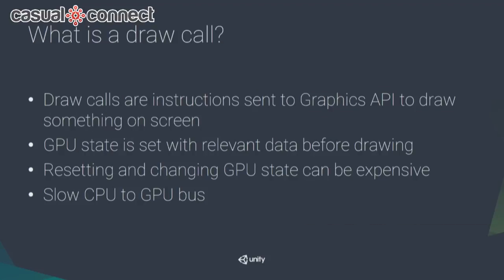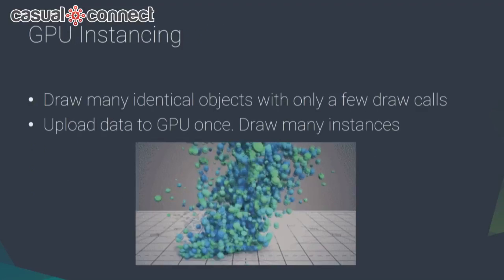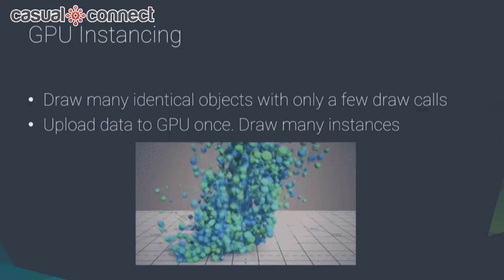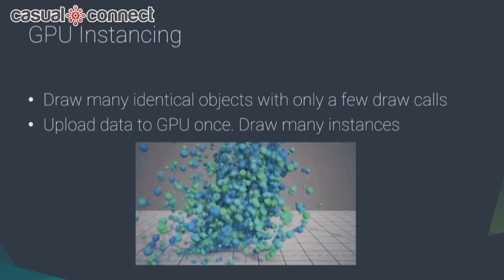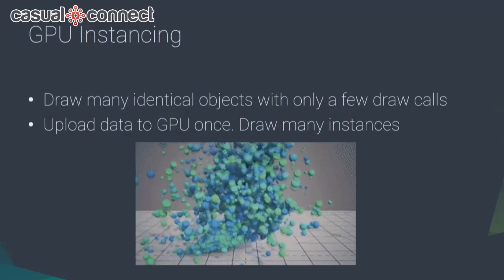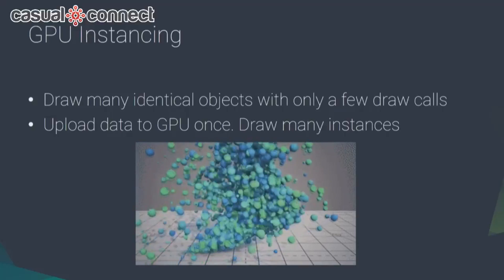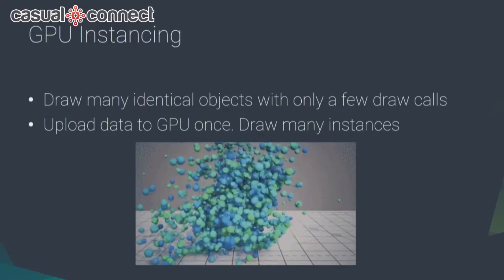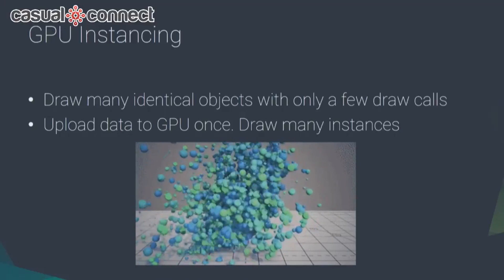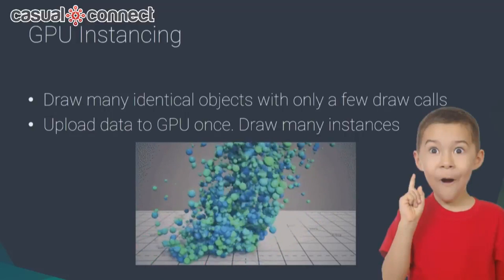A draw call is simply an instruction to the GPU to draw something on screen. But before drawing, you need to send the relevant data to the GPU, which can be very slow due to the slow CPU-to-GPU bus. If only we could send that data once and have the GPU reuse it — this is where GPU instancing is useful. You send the same mesh data once and the GPU draws it multiple times, saving a lot of transfer time.